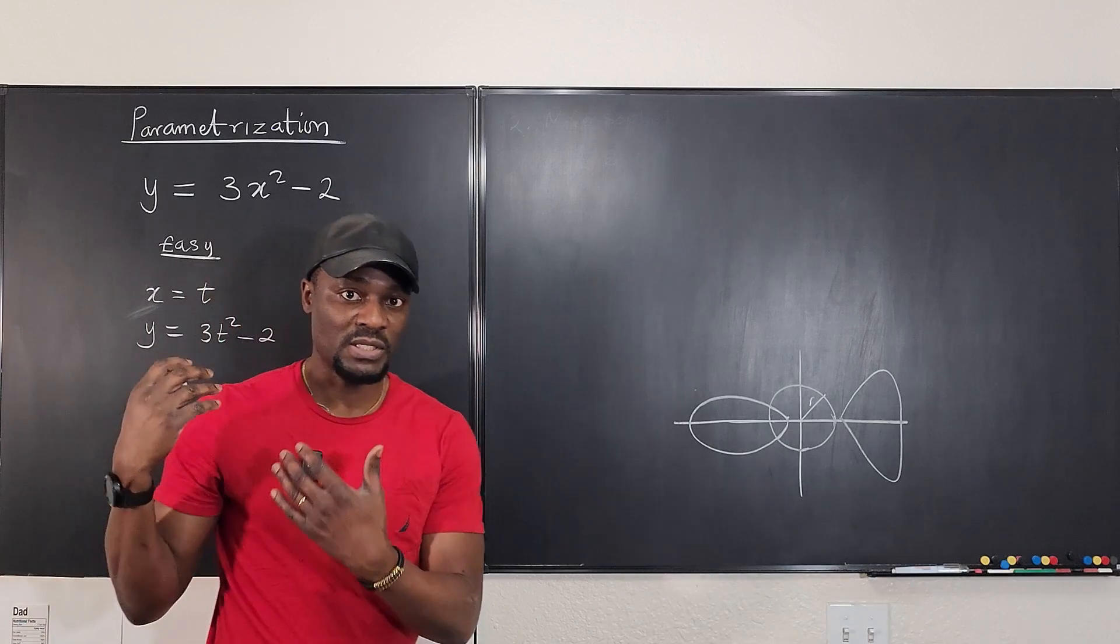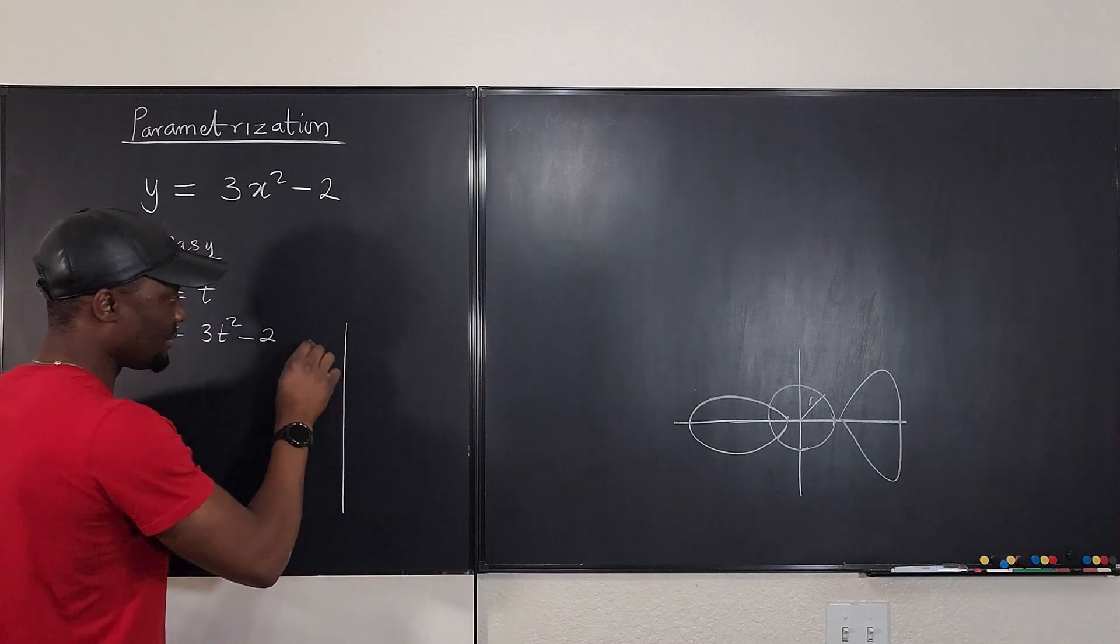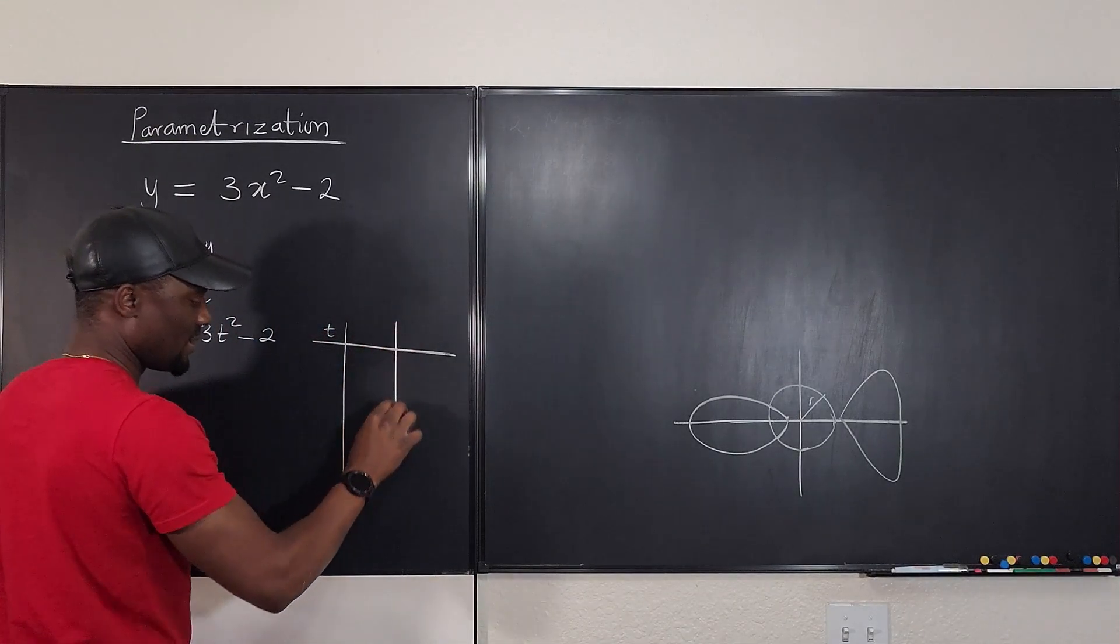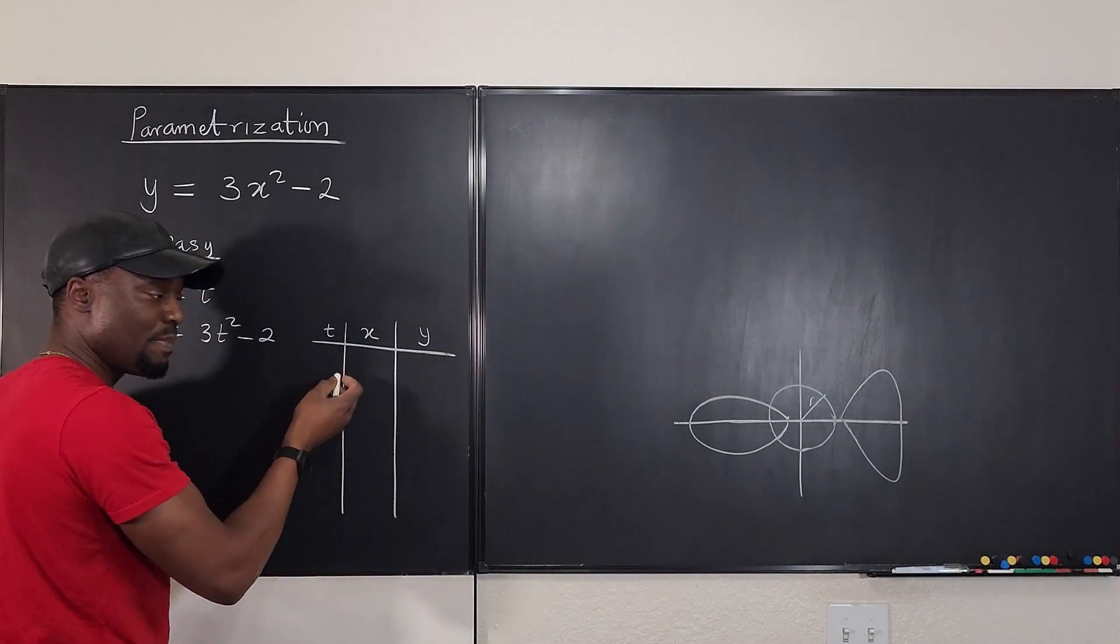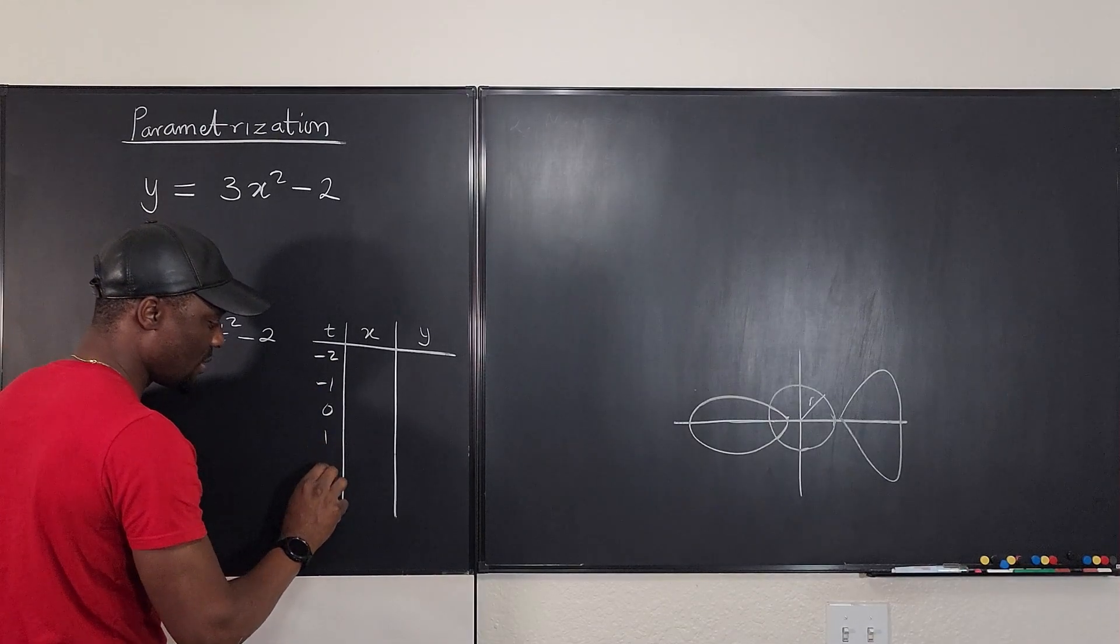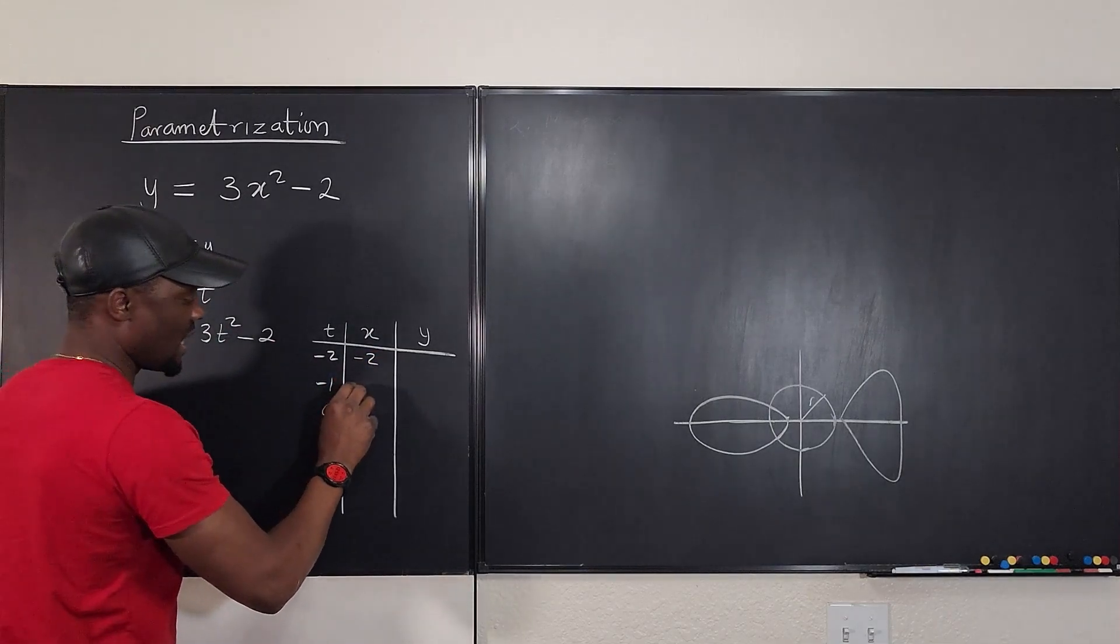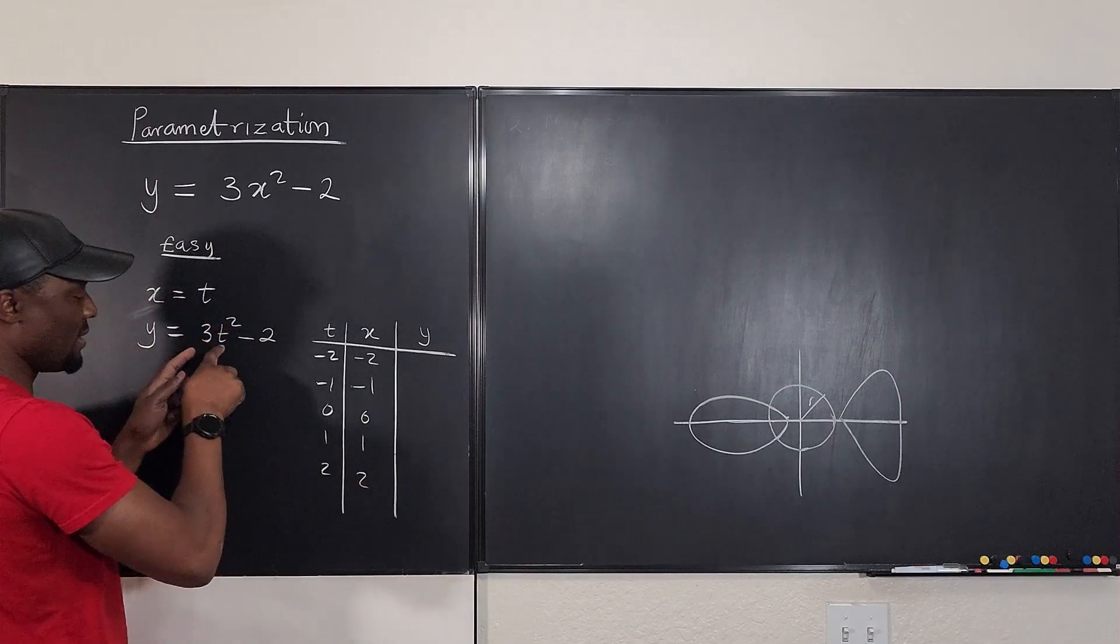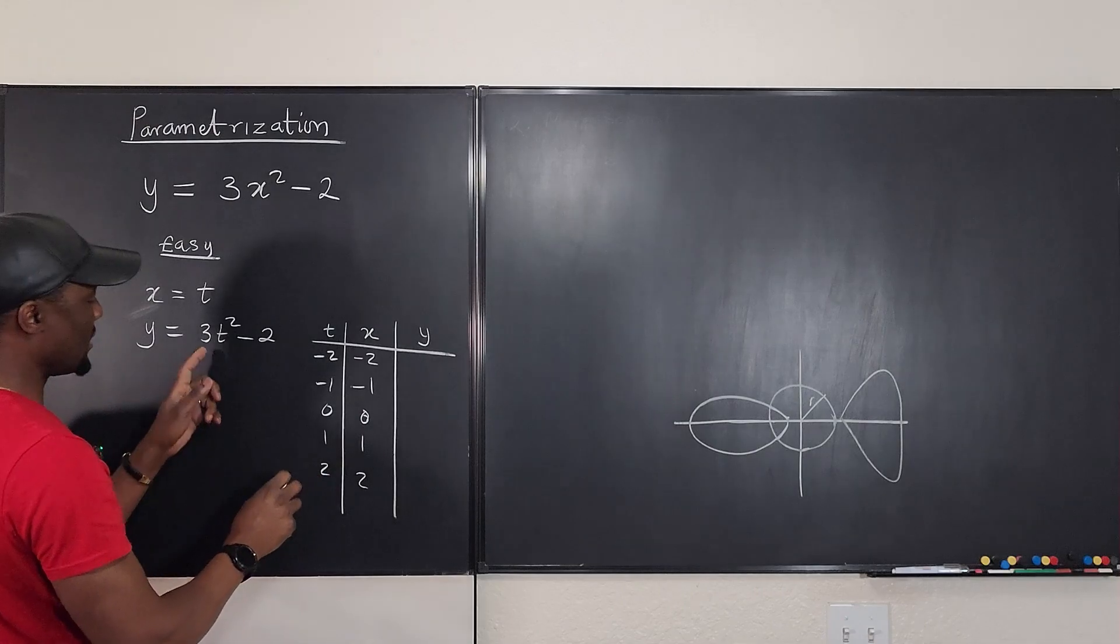So if you want to plot this graph, it's the typical graph you would plot. All you have to do is make a table and say this is t, this is x, and this is y. And then you're going to pick values negative 2, negative 1, 0, 1, 2, for example. Well, this is going to be the same thing because x equals t.